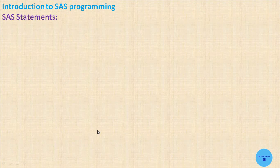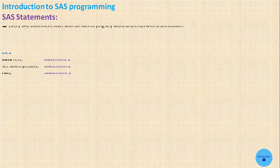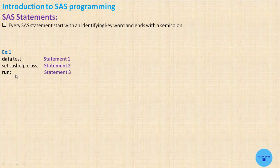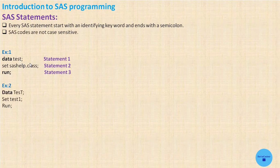Next we will see the introduction to SAS programming. Here we will see the syntax to write a SAS statement. Every SAS statement starts with an identifying keyword and it ends with a semicolon. In example one, the first statement starts with the identifying keyword 'data' and ends with a semicolon. The second statement starts with 'set' and ends with a semicolon. The third statement starts with 'run' and ends with a semicolon. So this code has three statements. The next rule is SAS codes are not case sensitive — we can write SAS code in lower case, upper case, or mixed case.